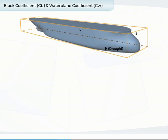The block coefficient is a measurement that can be used to determine the volume of displacement of a vessel in the formula: ship's volume equals ship's length times breadth times draft times block coefficient.